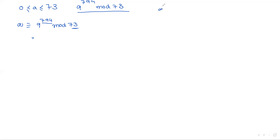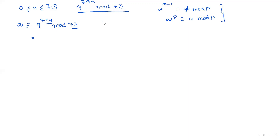To apply the formula a^p ≡ a (mod p), convert 794 in terms of 73. So 794 = 730 + 64, which means 9^794 = 9^(730+64).